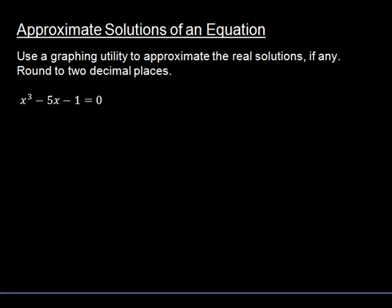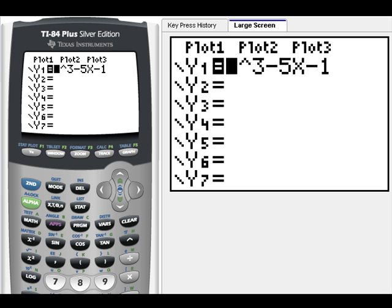Let's look at this equation. Use a graphing utility to approximate the real solutions, if any. Round to two decimal places. We have x³ minus 5x minus 1. So here is our calculator, and you can see I've put our equation into y equals.